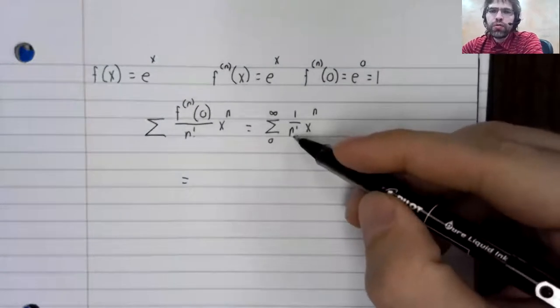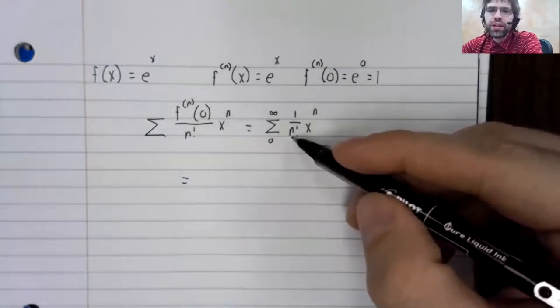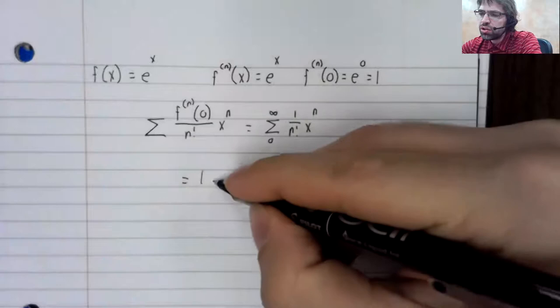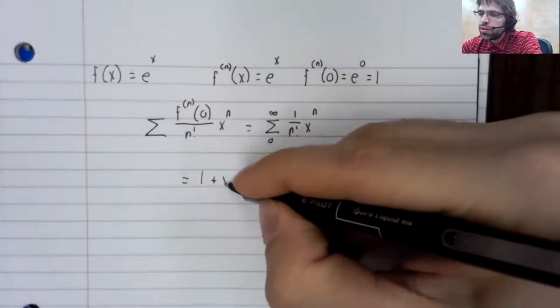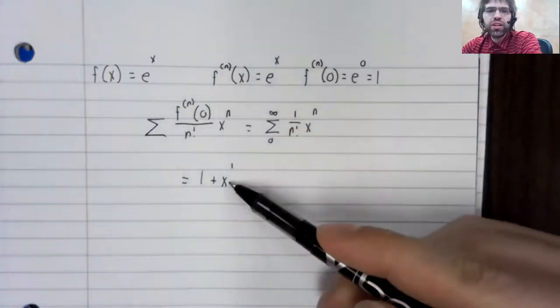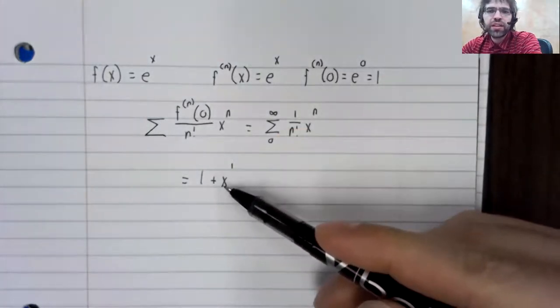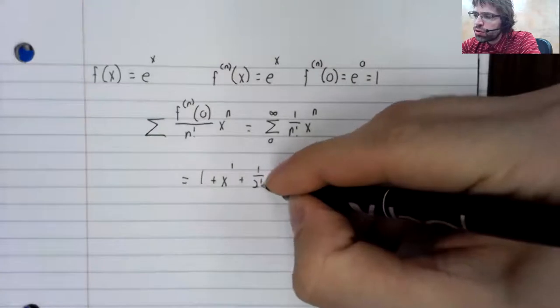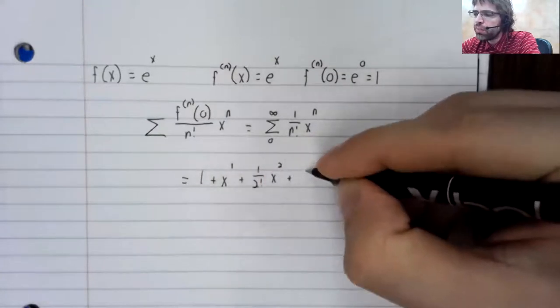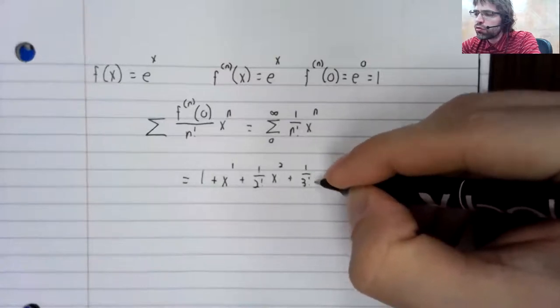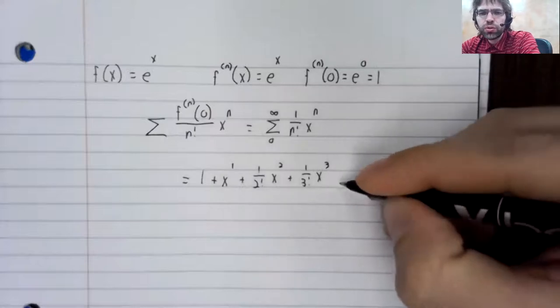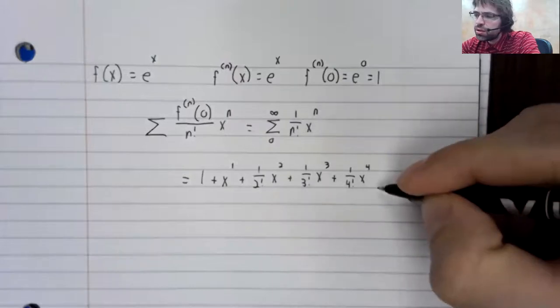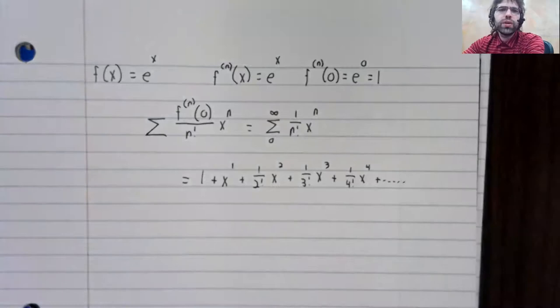One over zero factorial is one. X to the zero is one. So we have a constant term. Then one factorial is one, so we don't need to write in that division. But now one over two factorial x squared plus one over three factorial x cubed, and so on unto infinity.